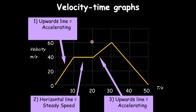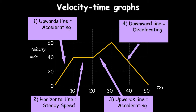The line goes up again, meaning it's accelerating until it reaches a maximum speed of 60 meters per second. Then the line goes all the way back down to zero, meaning it's decelerating — slowing down until it comes to rest after 50 seconds. For higher tier, you may be asked how far the car traveled — you must remember it's the area under the graph.